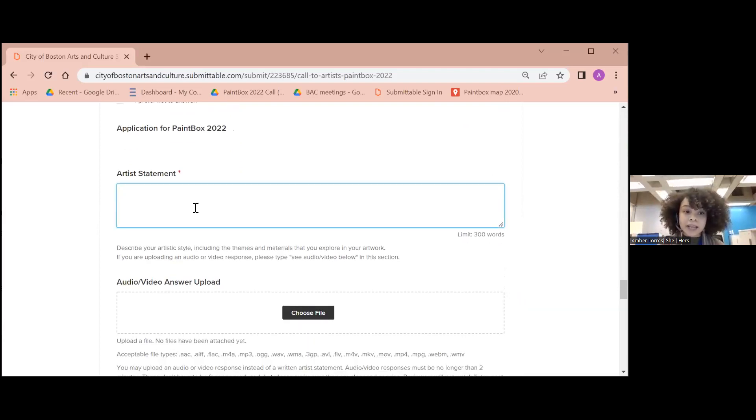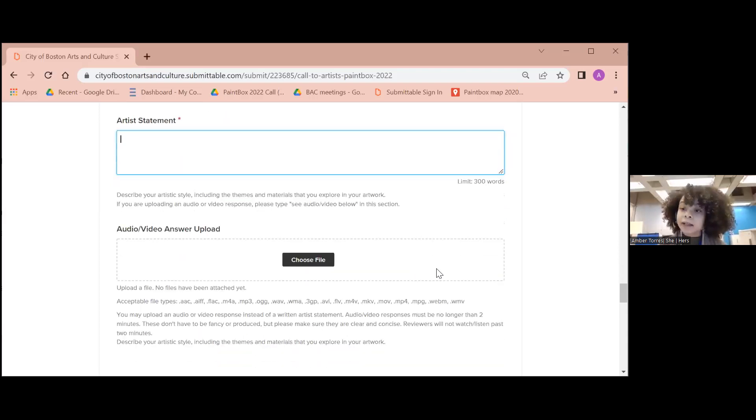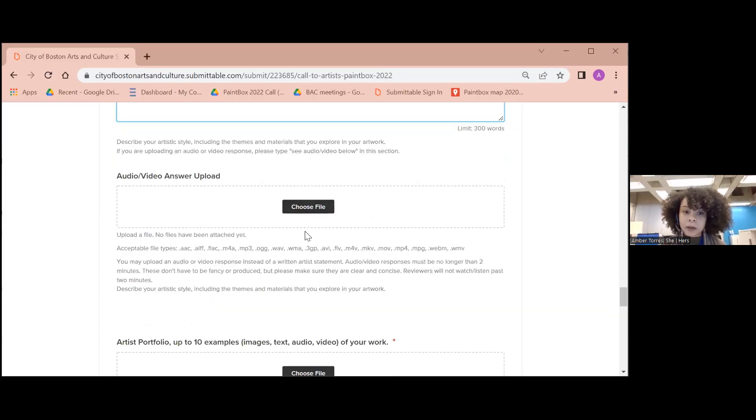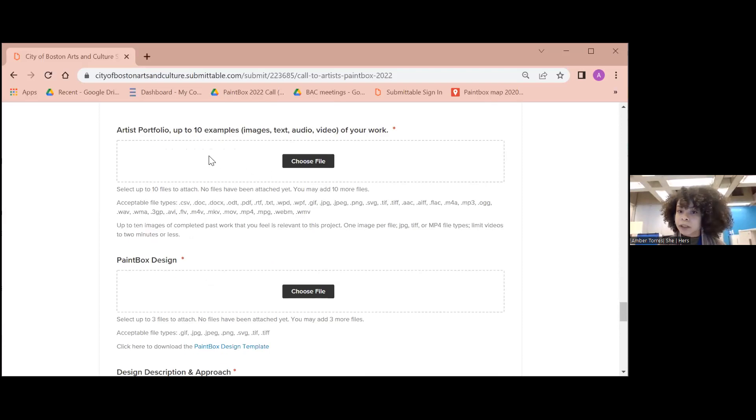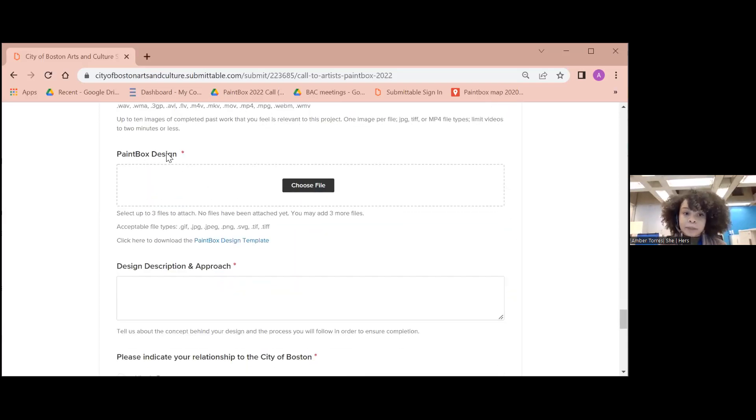Continuing to answer demographic information, and then finally submitting your application materials. Here is where you'll type up an artist statement. But I forgot to mention, you don't need to necessarily write the artist statement. You can submit a two minute long video. If you decide to submit a two minute long video to describe your artistic style and the materials and themes that you explore in your work, please write see audio/video below in this section, and then go ahead and upload your file below. Next, we'll want you to upload up to 10 images of past work. Your paint box design is what comes next. You can upload up to three designs if you'd like. We'd love for you to describe your design and the approach that you'll take to ensure that it's completed.